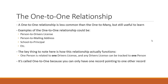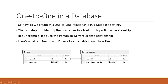Typically one person only has one mailing address, even though they might have a billing address or other addresses too. And one school typically has one principal, though they may have many vice principals. The key point is how the relationship functions: one person is related to one driver's license, and any driver's license can only be traced back to one person. It's called one-to-one because you can only have one record pointing to one other record.